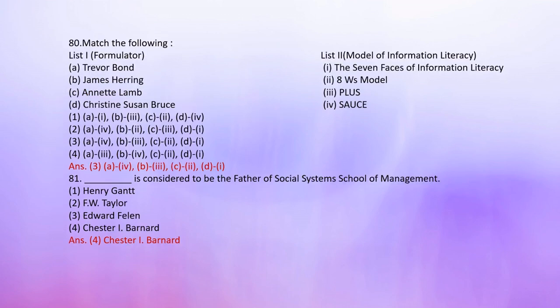Number 80: Matching — Formulator with Model of Information Literacy. A. Trevor Bond → 7 Phases of Information Literacy. B. James Herring → Plus model. C. Annette Lamb → AWS Model. D. Christine Susan Bruce → Sauce. The correct answer is 3: Trevor Bond → Sauce; James Herring → Plus; Annette Lamb → AWS Model; Christine Susan Bruce → 7 Phases of Information Literacy.